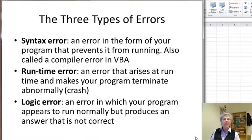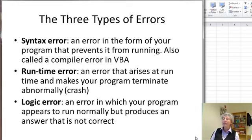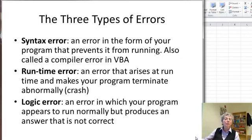The syntax error is an error in the form of your program, something that the VBA system can catch — they call it a compiler error. Then there is a runtime error, which is something that happens at runtime that prevents your program from progressing normally, and it terminates abnormally. Typically you get some kind of error message.